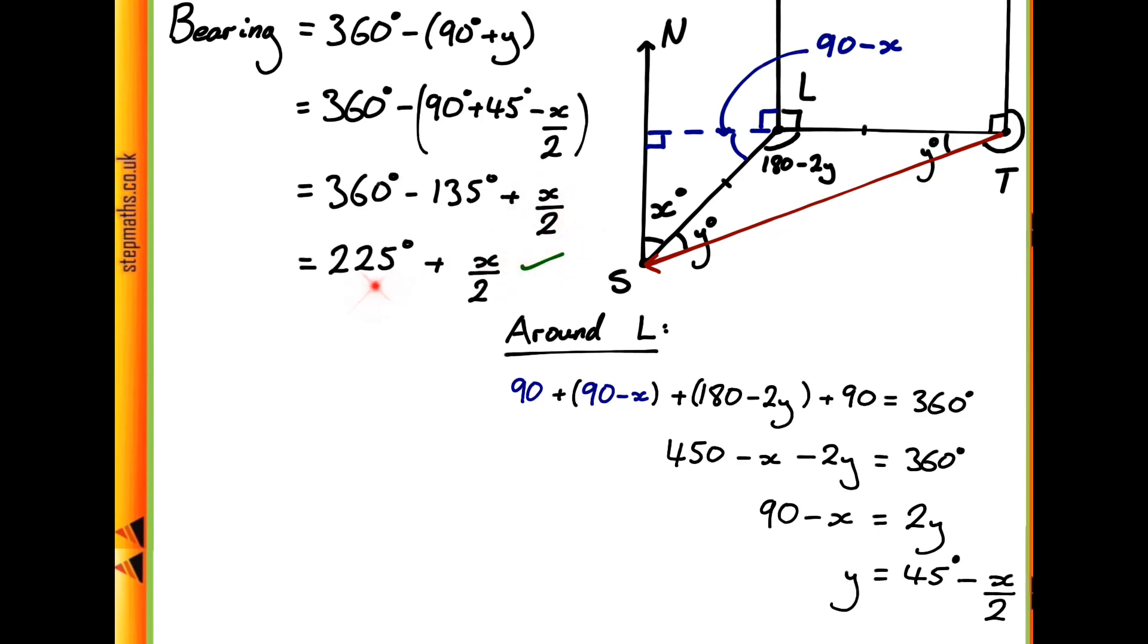So this all together is just going to equal 225 plus x over 2, which is going to correspond with answer F given in the question. So it's worth noting that with these bearing questions, there are generally a few ways of attacking them. The best thing to do is just to try and label on as much as you can and try and find the essential thing that you need in terms of the things you're given. So whichever way you go about it, it shouldn't really make a difference as long as you label things accurately.